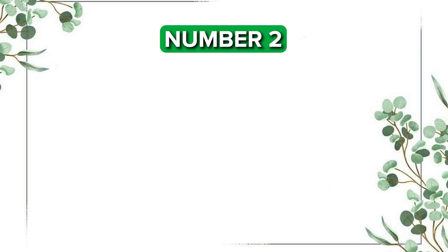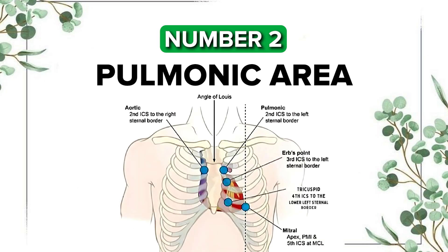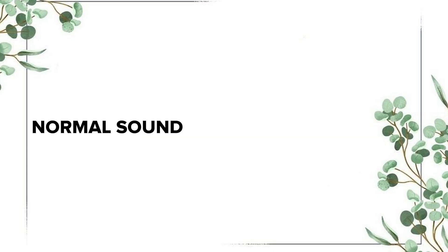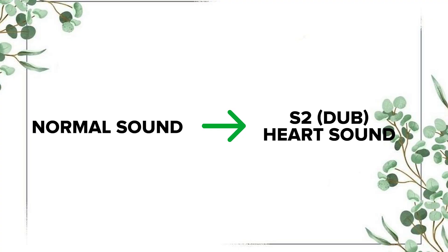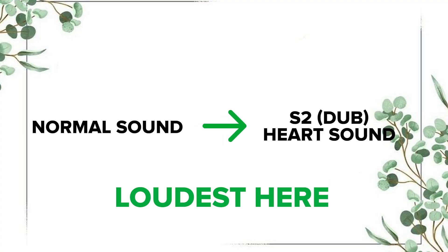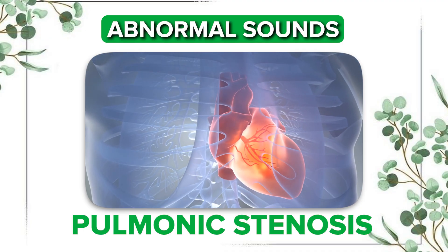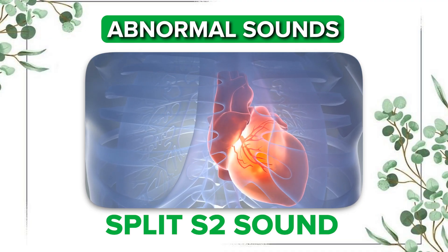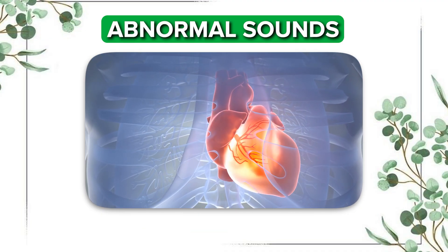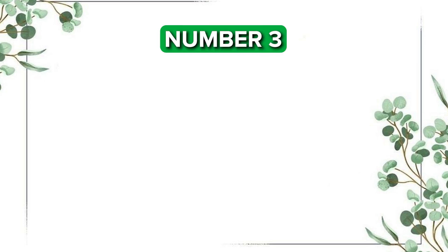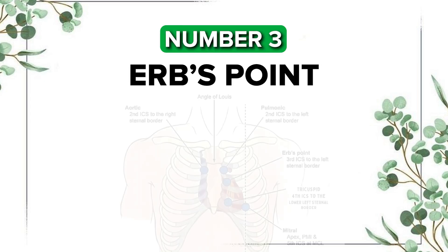Number 2 is the pulmonic area, which is the second left intercostal space, left sternal border. This is the best spot to hear the pulmonic valve. The normal sound is S2 or 'dub,' which is the loudest here. An abnormal sound is pulmonic stenosis or a split S2 sound, which can be normal or abnormal.